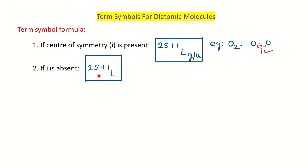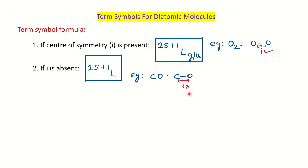If the center of symmetry is absent, the formula will be only ²ˢ⁺¹L. For example, carbon monoxide: on one side it is a carbon atom, on the other side it is an oxygen atom. Since the two atoms are different, the molecule does not have a center of symmetry. In this case, G and U will not be applicable.